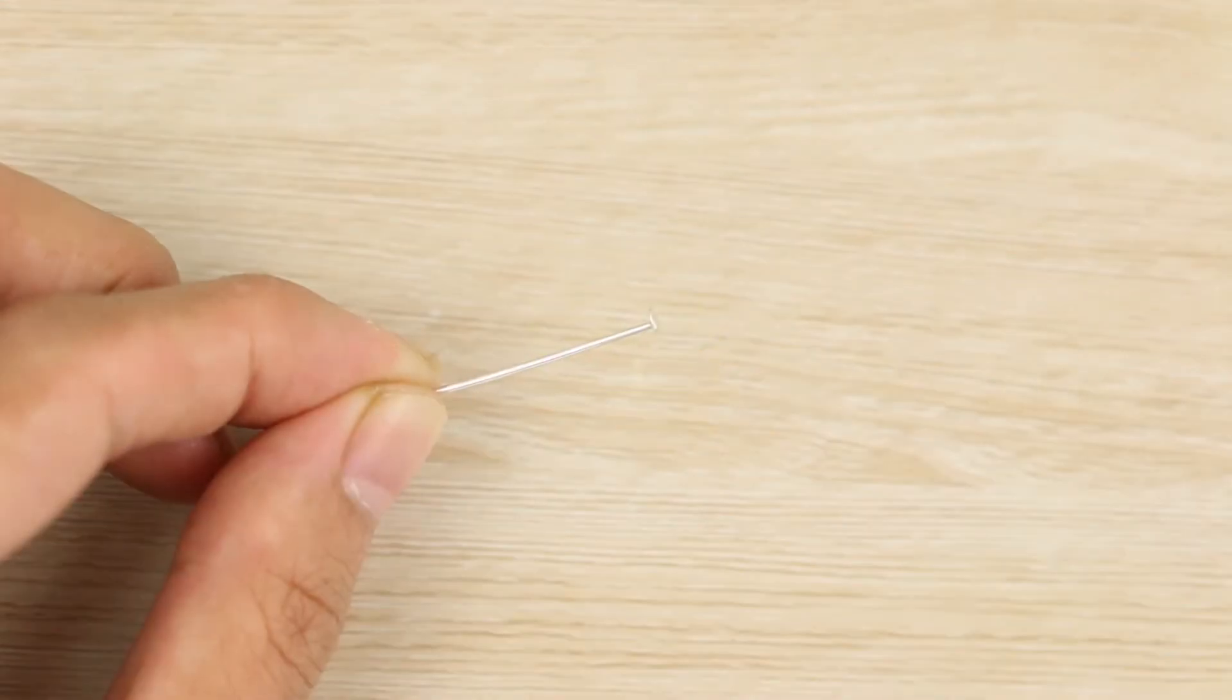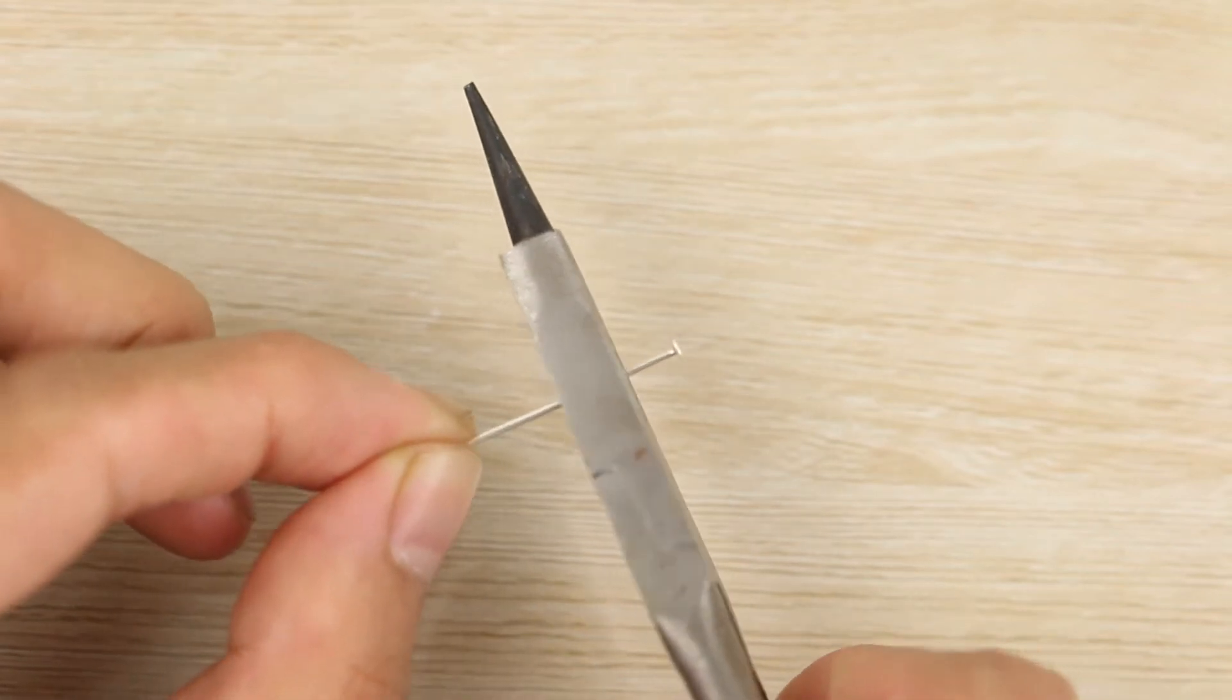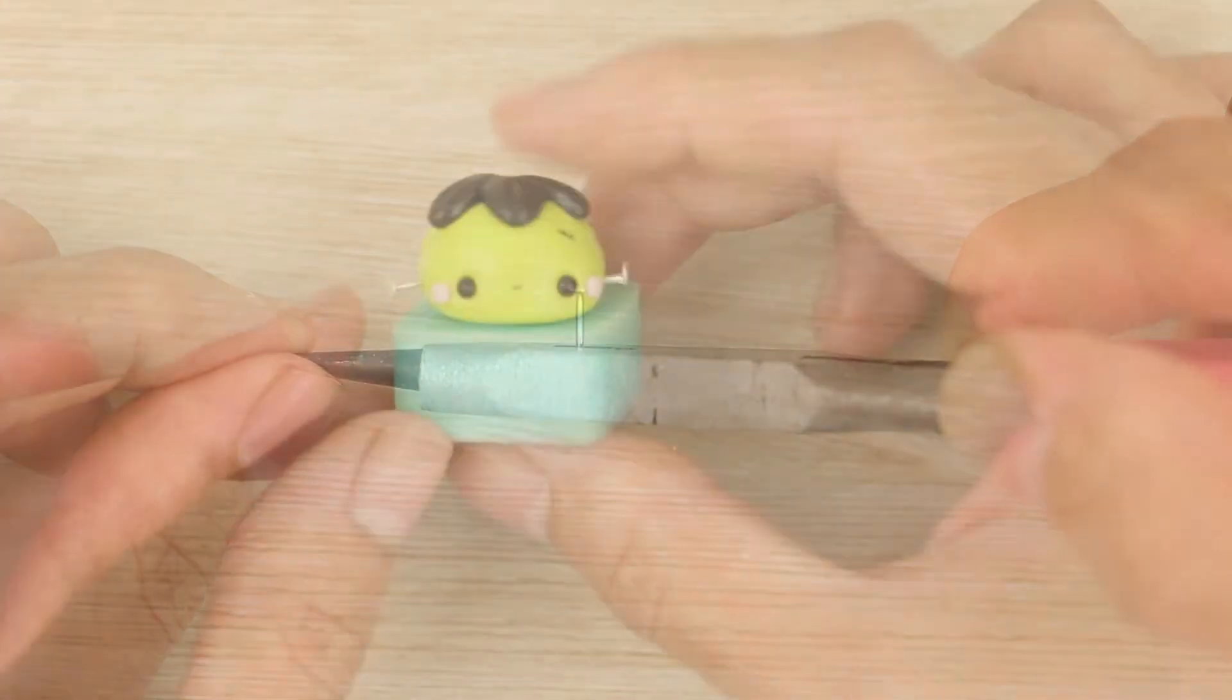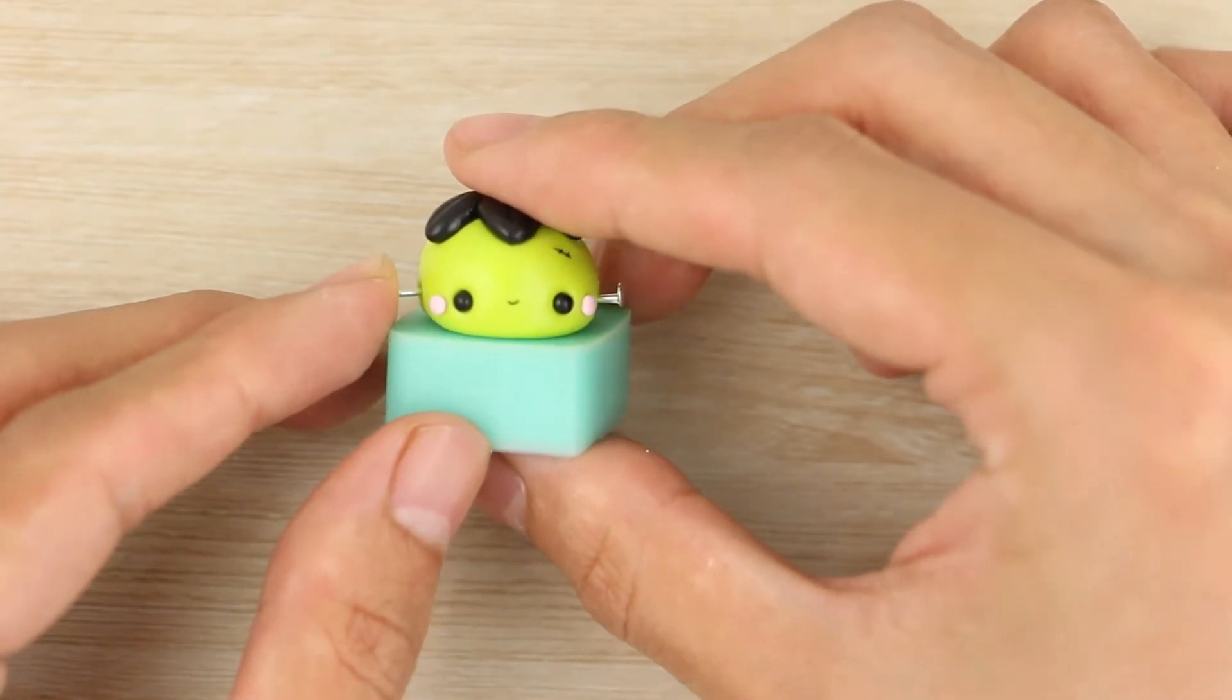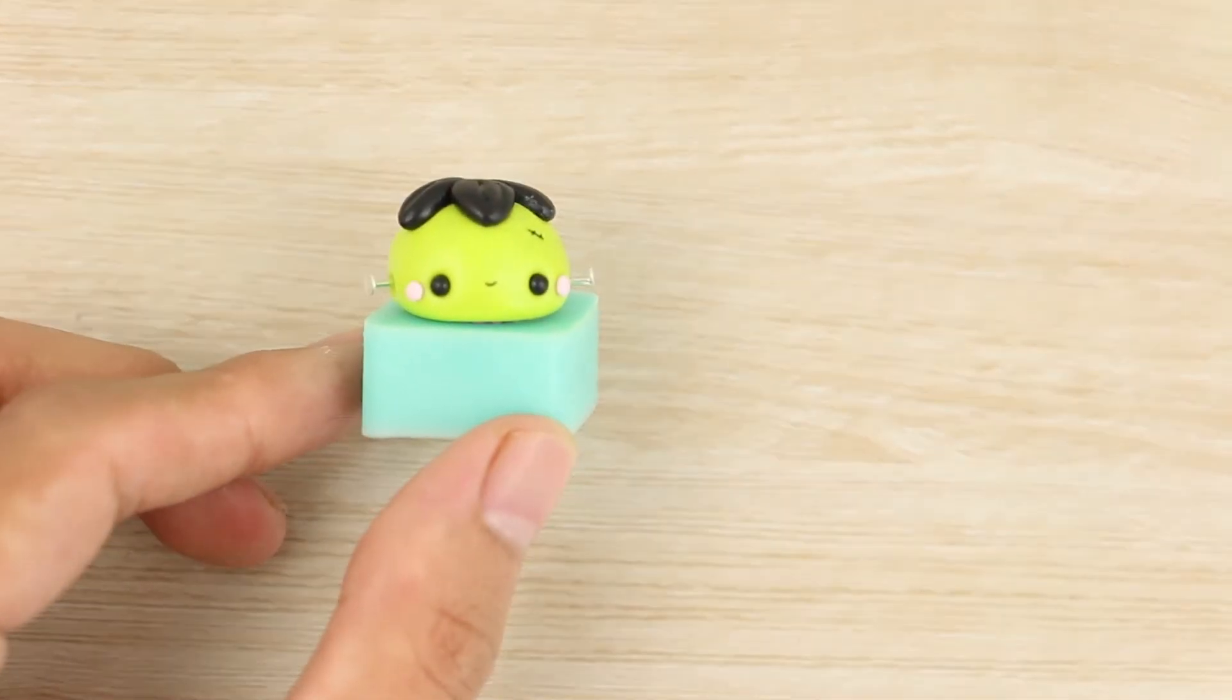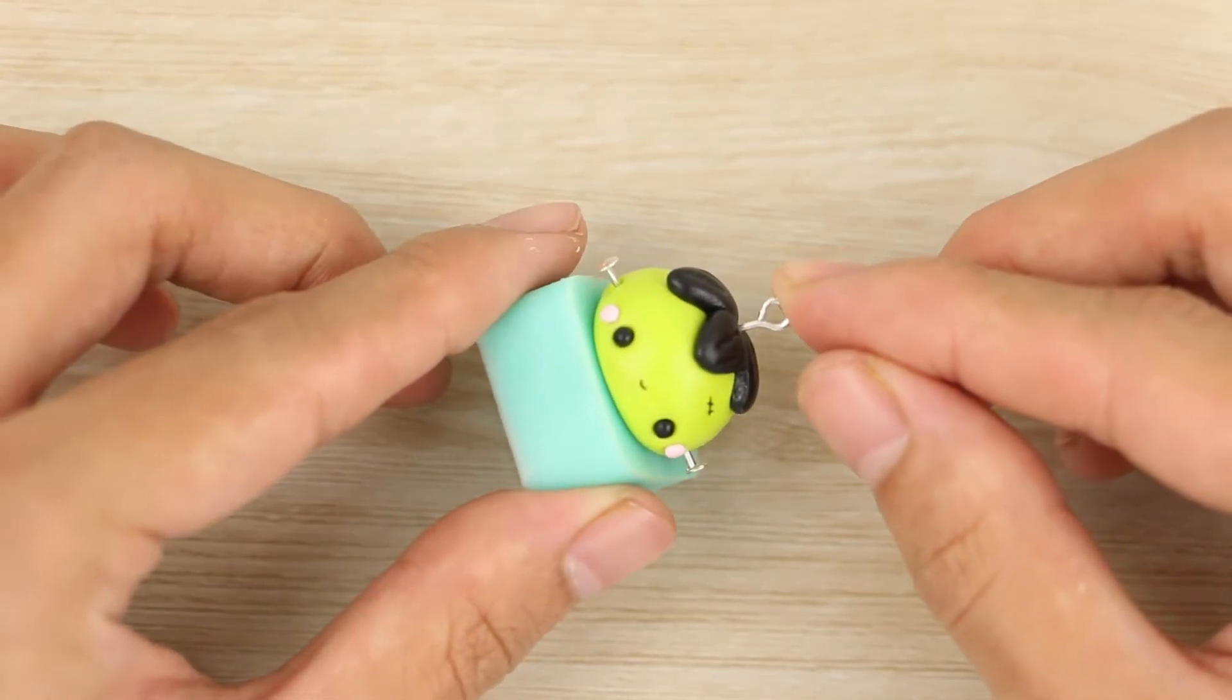To make the bolts in the neck I have a head pin and I'm trimming it shorter with some pliers. I've made two of these and I'm pushing one each into either side of the monster, and finally to turn it into a charm I'm adding in an eye pin at the top.